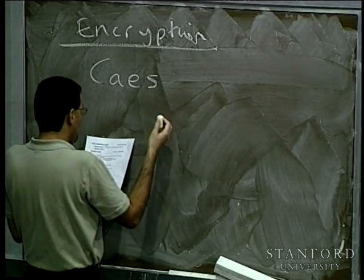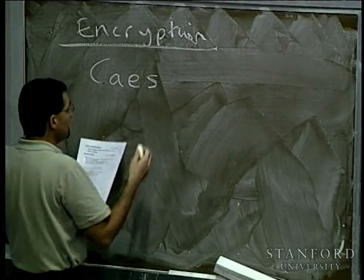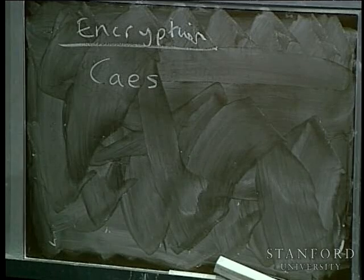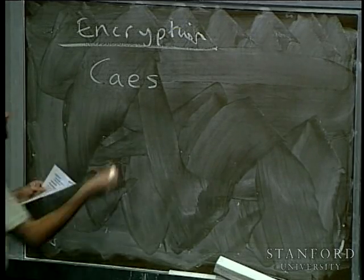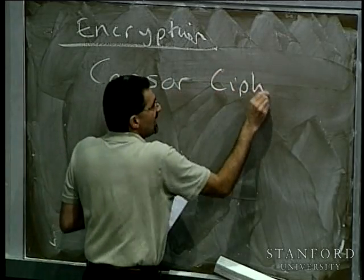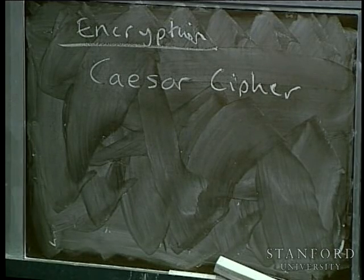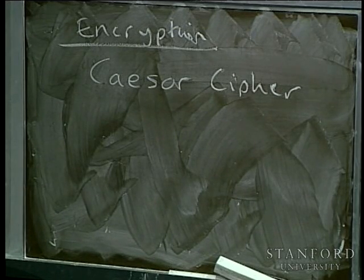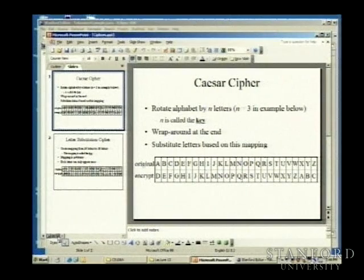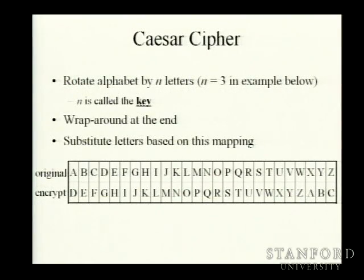There's a really interesting book by Simon Singh about the whole history of encryption — wars and kingships were basically lost and won on the strength of how well someone could break a piece of code. One of the most well-known cipher methods is something known as the Caesar Cipher. The basic way it works is we take our original alphabet and rotate it by some number of letters to get a replacement.